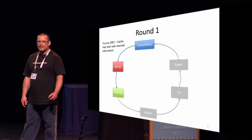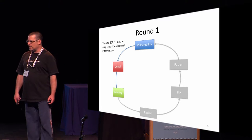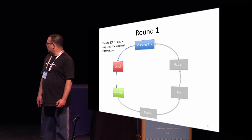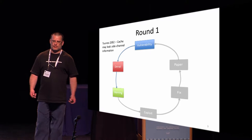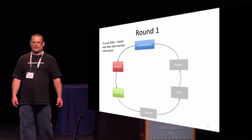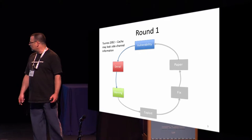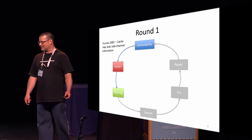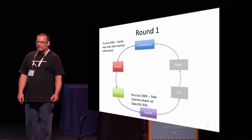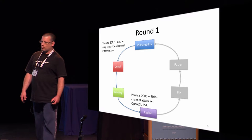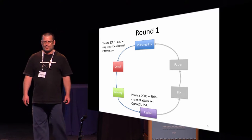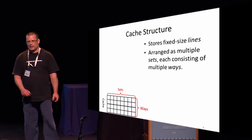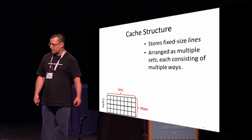Round one. 2002, Tsunou and others published a cache attack on Misty. No one really took notice of that because it was Misty and it was theoretical and it didn't really work, so no one changed anything, no one issued any warnings. But in 2005, Percival published a real attack working against OpenSSL RSA. The attack works on the cache, and we'll now describe how the attack works.